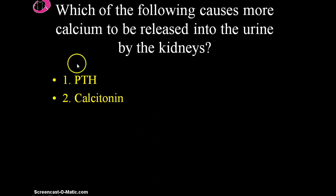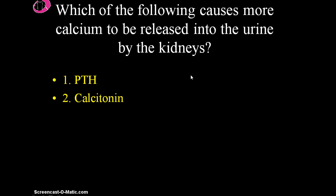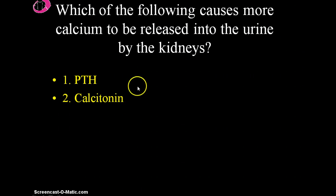Parathyroid hormone does the opposite — when parathyroid hormone is secreted, blood calcium levels are low, so we don't want to release calcium into the urine. We want to keep it in the blood supply. Both hormones therefore influence not only bone cells but also the kidneys and the release or retention of calcium through the urinary system.